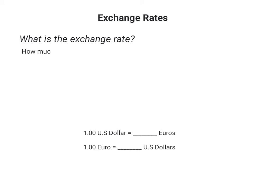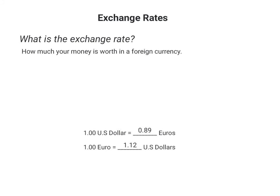The exchange rate is basically how much your money is worth in a foreign currency. For example, let's say you're traveling from the US to one of the countries in Europe that still uses the euro. When you go to exchange your US dollars for euros, for every one US dollar that you give them, you'll get 0.89 euros in return. Upon returning from your trip, each one of those euros that you didn't spend are worth 1.12 US dollars. In other words, this right here was your exchange rate.